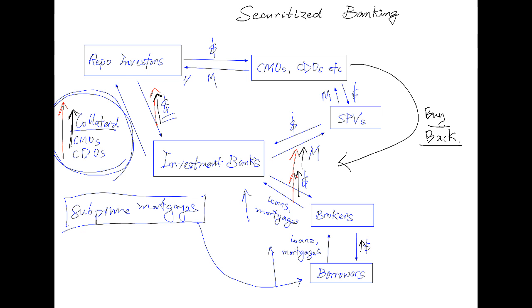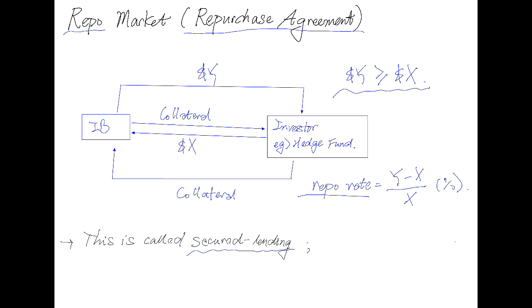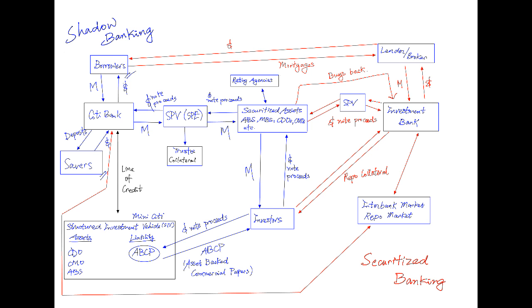We all know how that story ended. Let's return to the very first diagram shown in my first video, this time with investment banks in the picture. This diagram combines shadow banking and securitized banking — shadow banking shown with arrows in blue, and securitized banking with the investment bank operating in red. One of the major problems with this banking system was that it was unregulated — no one knew what was going on until a number of subprime mortgages started defaulting and caused a dramatic domino effect which led to the crisis.